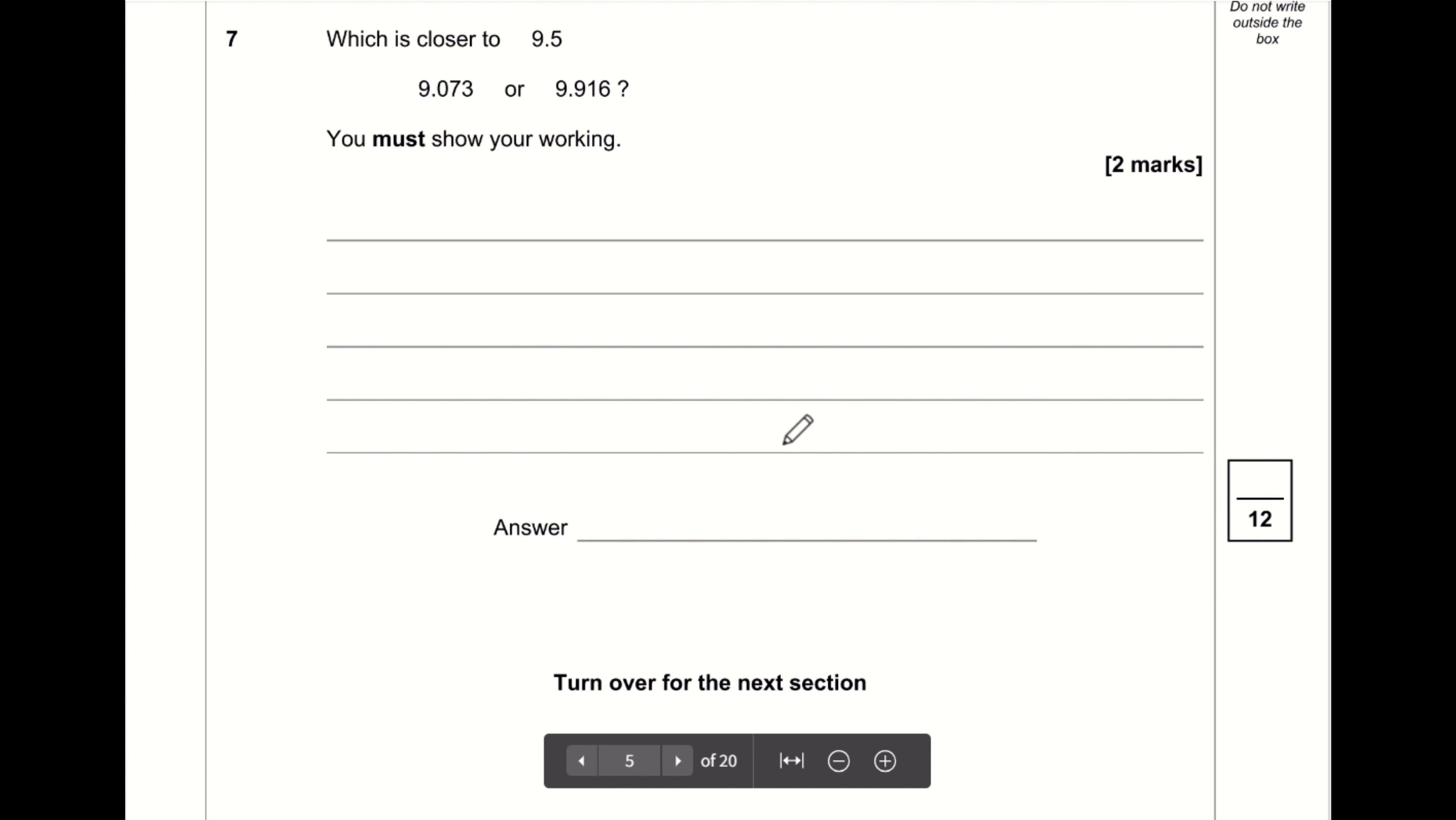Question seven, which is closer to 9.5, 9.073 or 9.916? What's the difference between 9.5 and 9.073? The difference means let's do some subtraction. So 9.5 minus 9.073, that is 0.427. And 9.916 minus 9.5, that is 0.416. The one that is closer to 9.5 is going to be the one that has generated the smaller answer. This is the smaller answer. So therefore, 9.916 is closer to 9.5 than the other number.